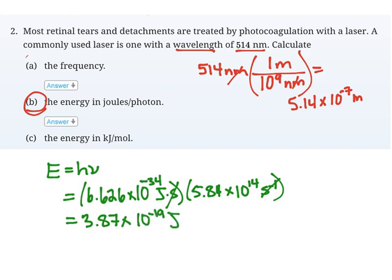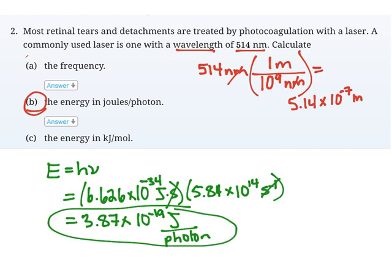It's implied that this is joules per photon. So whenever I'm using this energy equation, this is the joules that are emitted per photon that have that frequency.